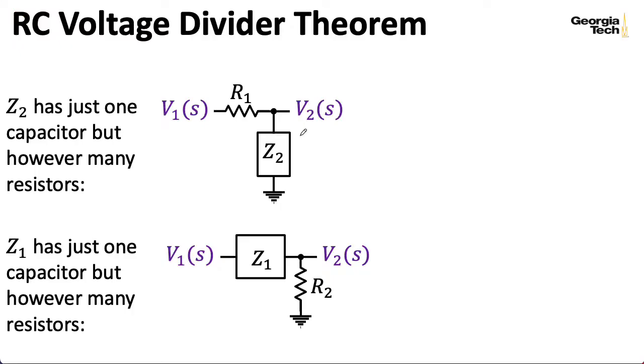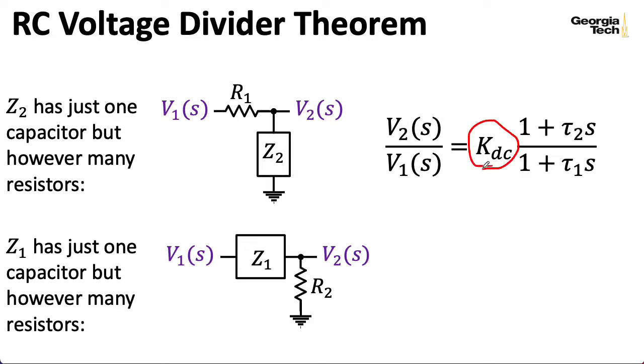Anyway, the idea is we can write down the transfer function for this voltage divider as finding the transfer function at DC times this ratio here, where the ratio has two time constants.